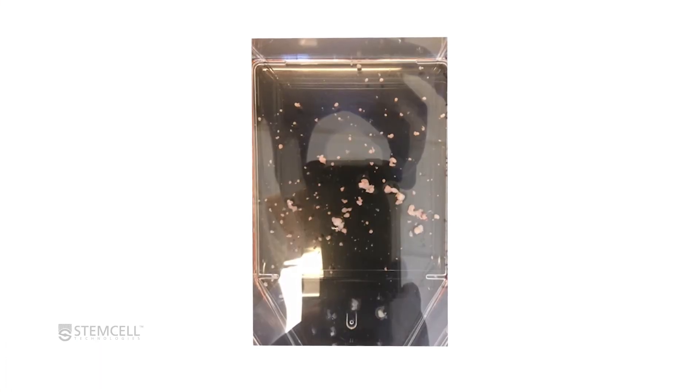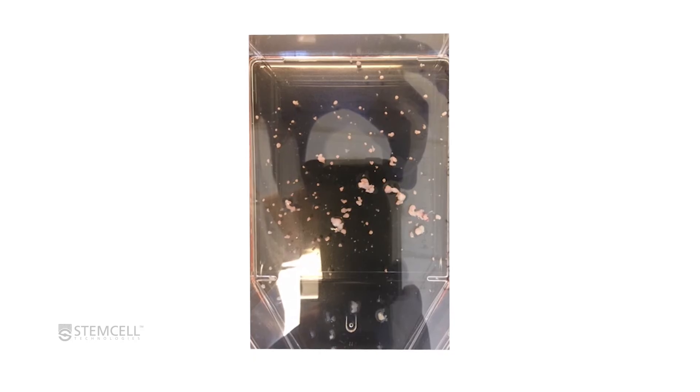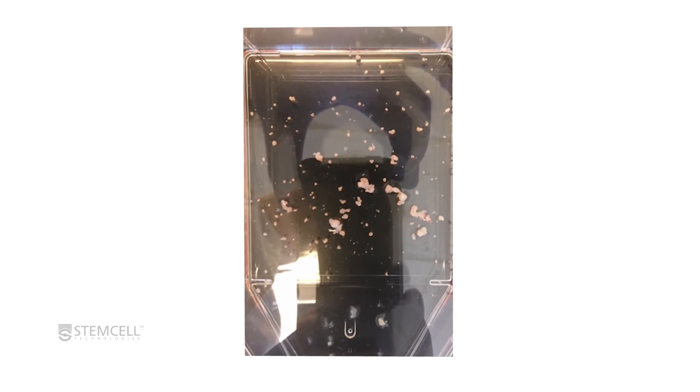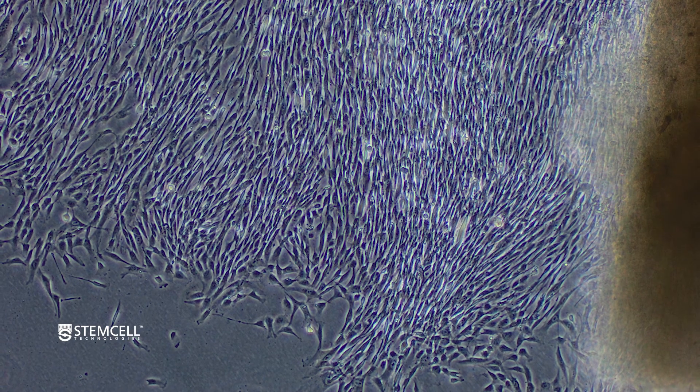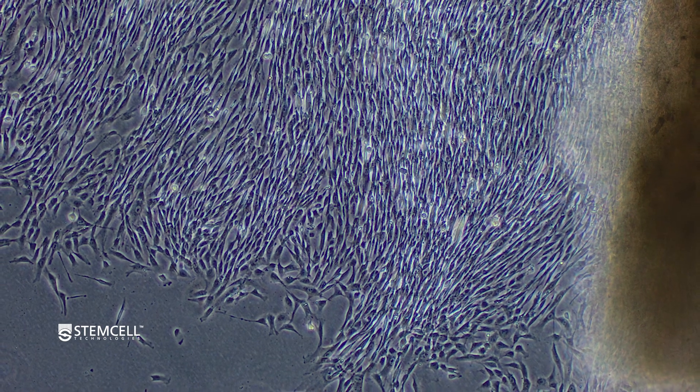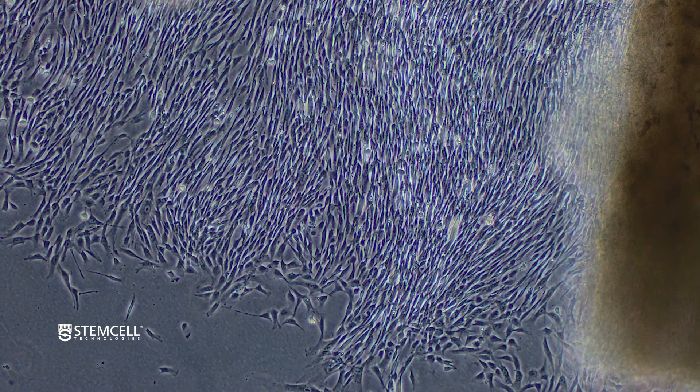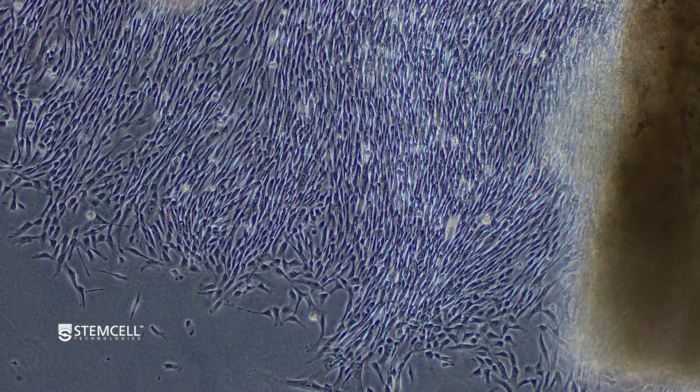After 10 to 14 days of culture, the tissue pieces may start to condense into compact round balls and detach from the flask. This is an indication that the cells are ready to harvest. If the tissue is still attached but the cells have become confluent, this is another indication that it is time to harvest the cells.